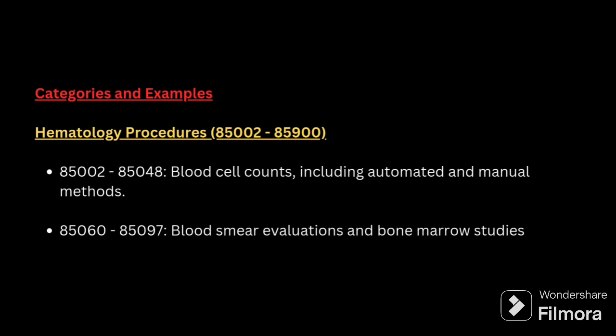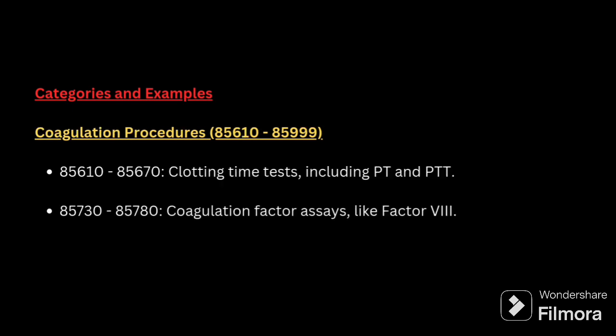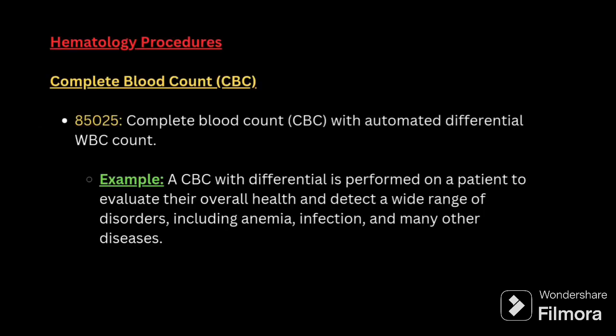You can check the code series to clearly understand what procedures are covered. Next, coagulation procedures are 85610-85999. Codes 85610-85670 give clotting time results including PT and PTT, and 85730-85780 cover coagulation factor assays like factor 8.